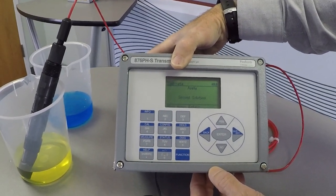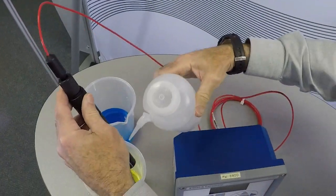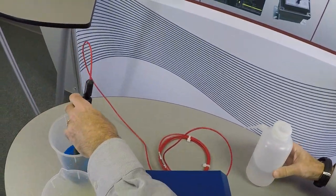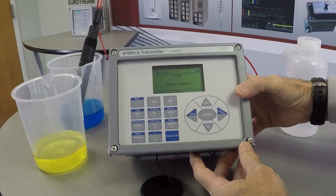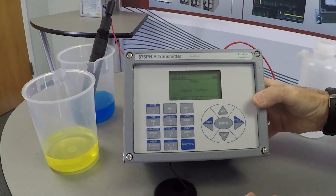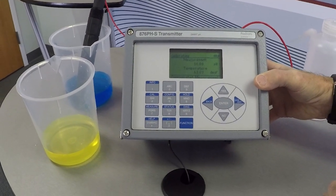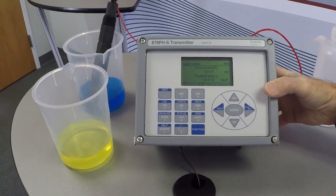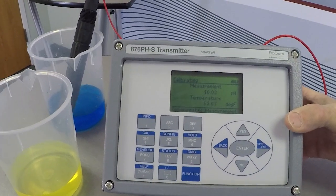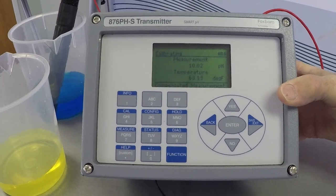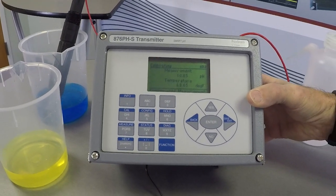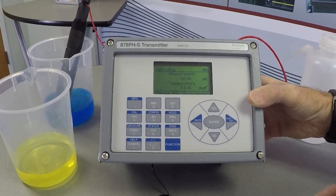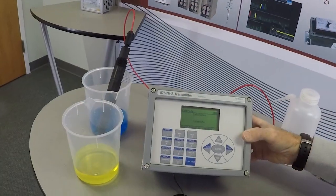And now they're asking to switch to your second buffer solution. Let it stabilize a little bit in the 10 buffer. We've selected our second standard. It's coming up as 10. Temperature's fairly stable. In the smart mode it's going to wait for that value to stabilize. Here we go.